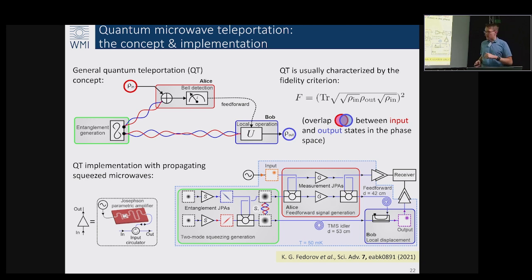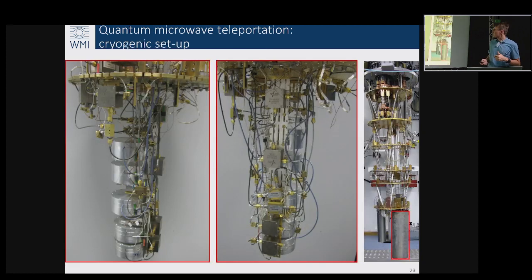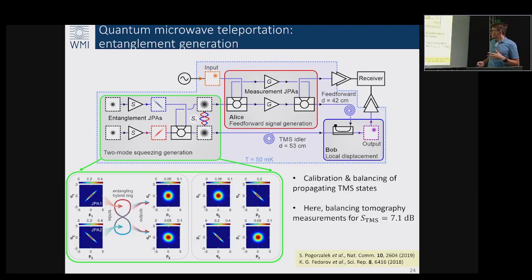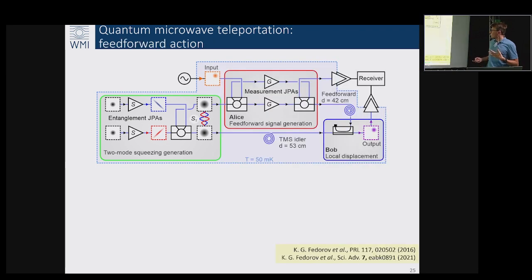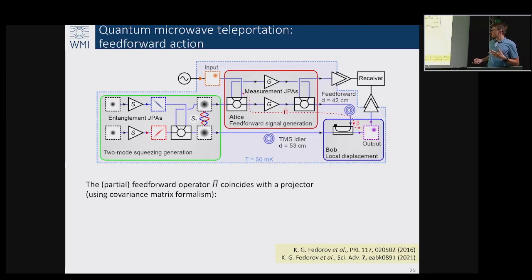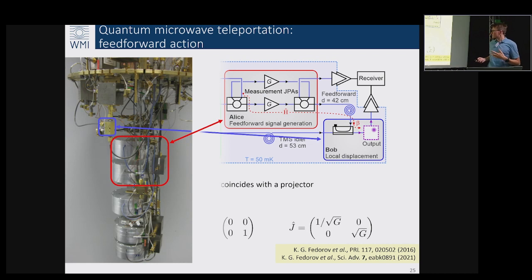We have quite a lot of technical details which have been published and described in this paper. I don't have time to describe all of them in detail - it's just how our setup at the bottom of the dilution fridge looks like: five JPAs, or well only four when we used, and we can do all the necessary parts such as calibration of our two-mode squeezed states and their state tomography.